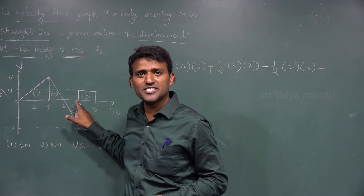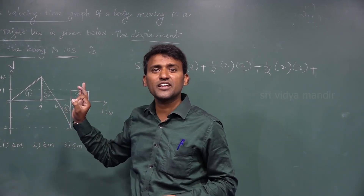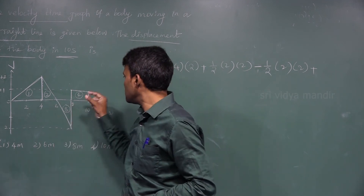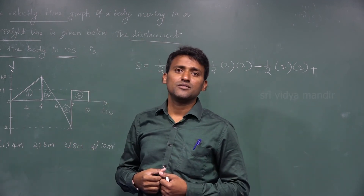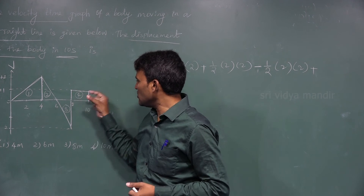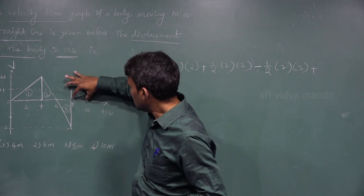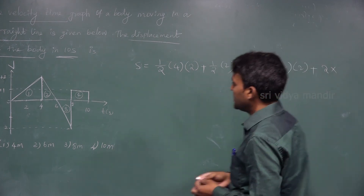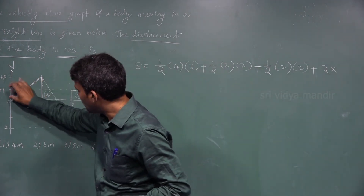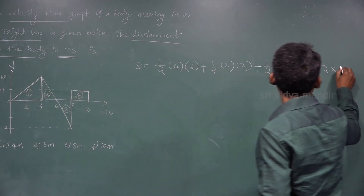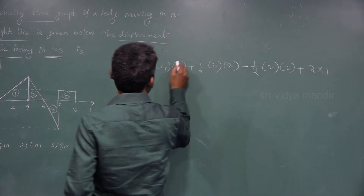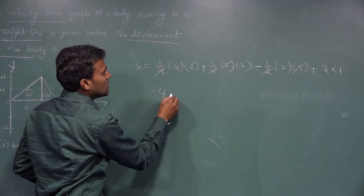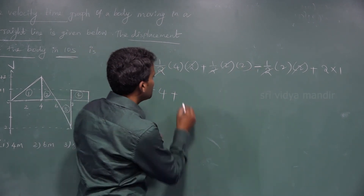For the fourth shape, whether we assume it is a square or rectangle, we get the same answer. Side × side, or length × breadth: (10 − 8) × (1 − 0) = 2 × 1. Now the twos cancel: 2 and 2 get cancelled, 2 and 2 get cancelled, 2 and 2 get cancelled.